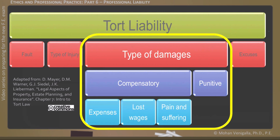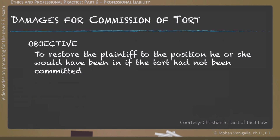Compensatory damage awards can cover expenses such as legal fees, lost wages, and pain and suffering. The overall objective of awarding damages for committing tort is to restore the plaintiff to the position he or she would have been in if the tort had not been committed.